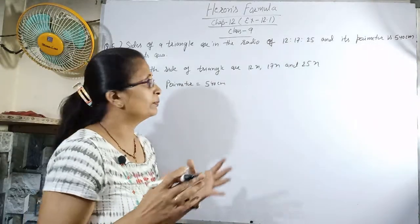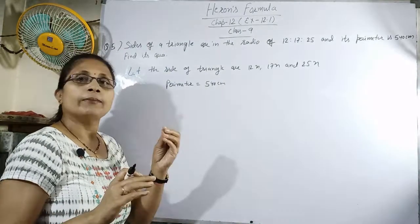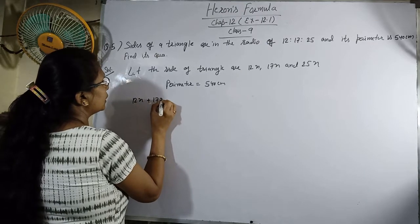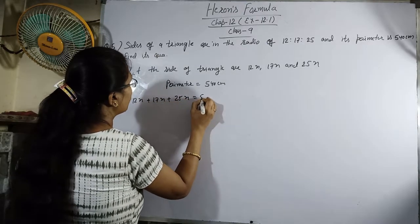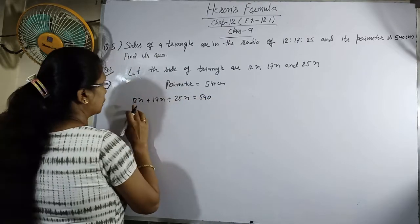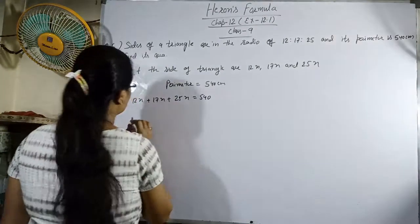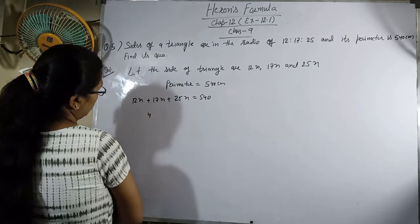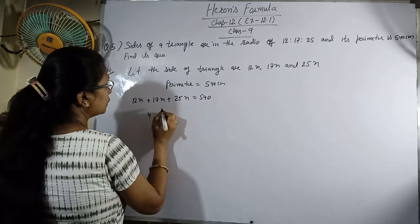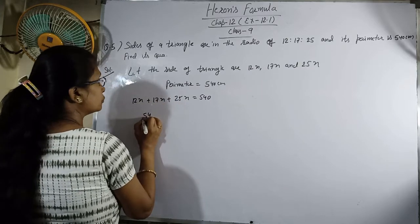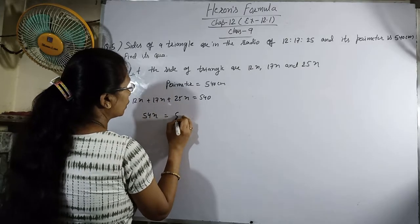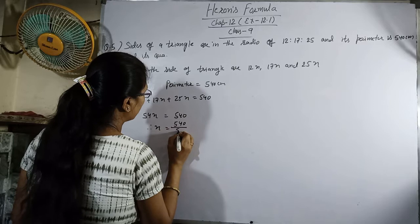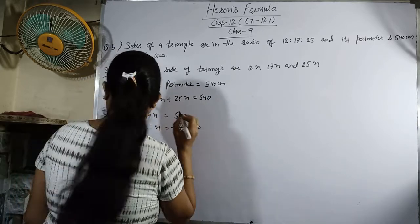Now we need to find the sides. Since they're given in ratio, we find the actual measurements. 12x plus 17x plus 25x equals 540. That gives us 54x equals 540. Therefore, x equals 540 divided by 54, which equals 10.